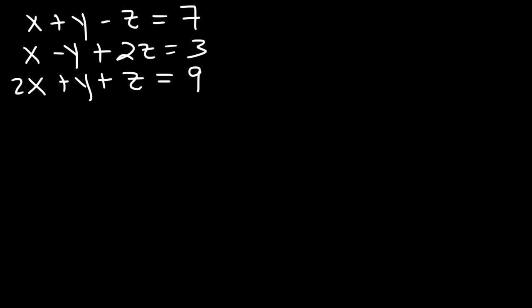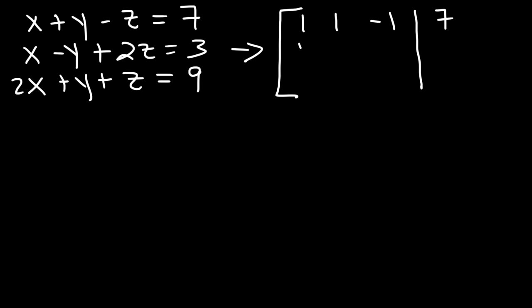The first thing we need to do is convert this to an augmented matrix. We write the coefficients: 1, 1, negative 1. Then we use a vertical bar to separate the left side from the right side, and put 7 on the right. The second row is 1, negative 1, 2, 3. And the third row is 2, 1, 1, 9.